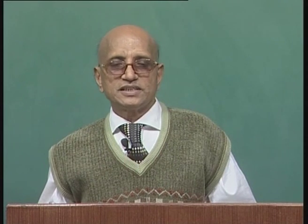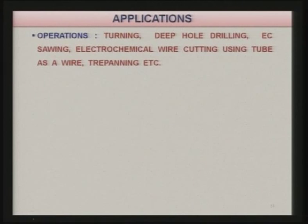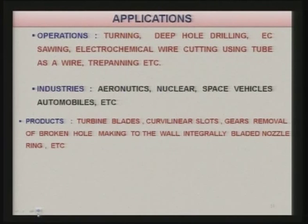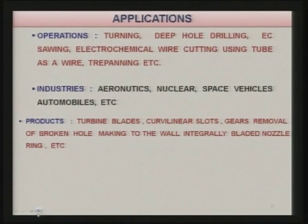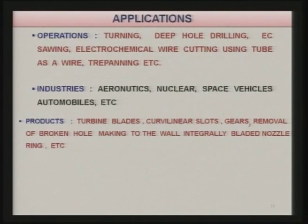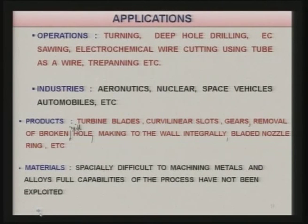Applications of ECM include: electrochemical turning, deep hole drilling, electrochemical sawing, electrochemical wire cutting using tube as wire, and ripening operations. This process is used in industries such as aeronautics, nuclear power plants, space vehicles, and automobiles. Specific products commonly made include turbine blades, curvilinear slots, gears, removal of broken gears, removal of broken drill tips from holes, integrally bladed nozzles, and rings. It is especially applicable for difficult-to-machine metals and alloys.